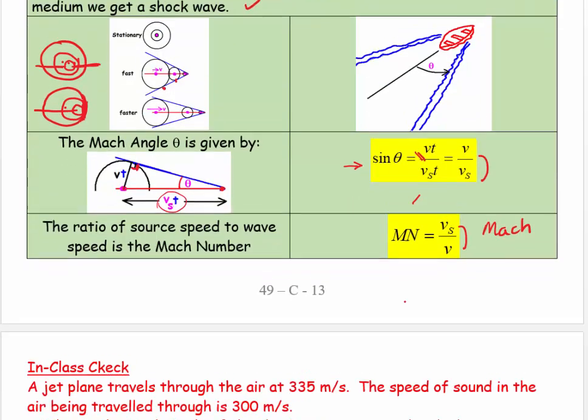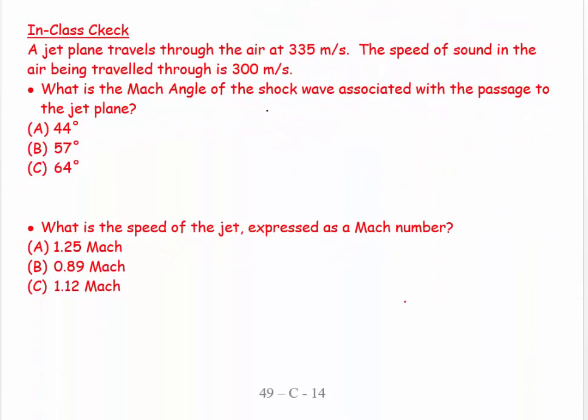Okay let's have a look at this. So I see a jet plane travels through air at 335 meters per second. The speed of sound in air is 300 meters per second. There's a shock wave.